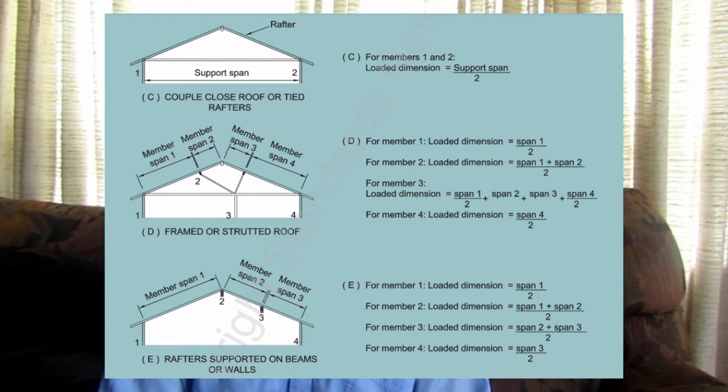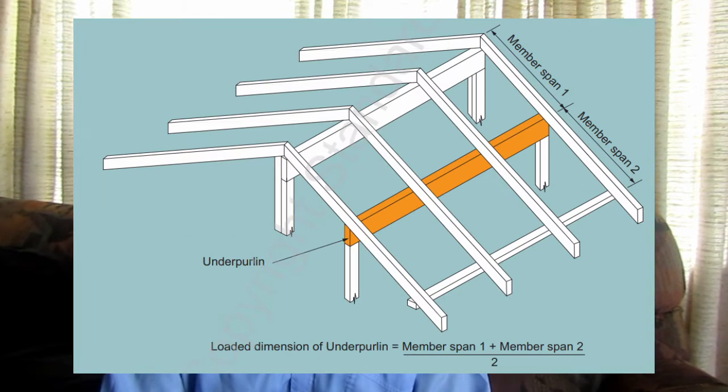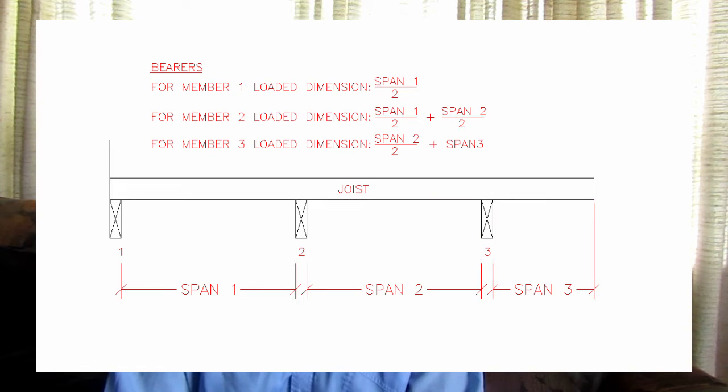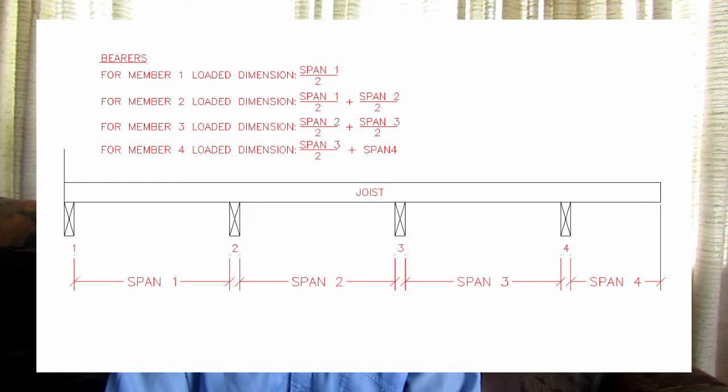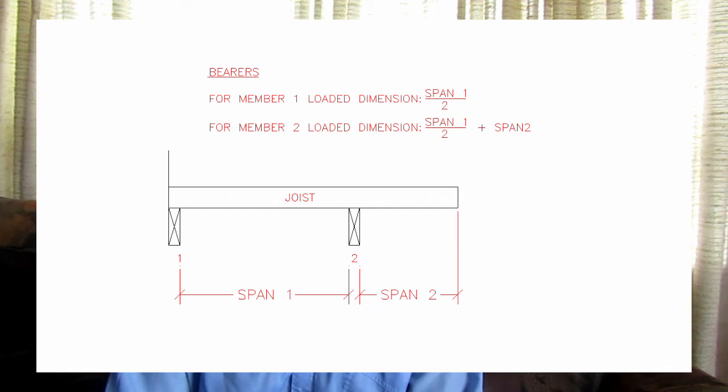There are also loaded dimensions specified in NZS 3604 for roofs, but this video is really just dealing with decks only. There are a few diagrams here showing just how this would look for your deck, depending on the number of bearers you have and if you have or haven't got an overhang. These diagrams show quite clearly how this is actually calculated.